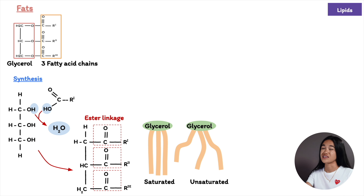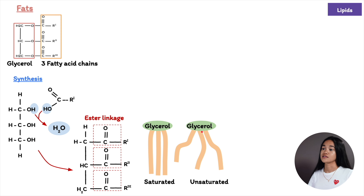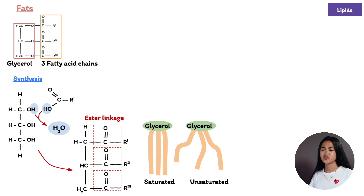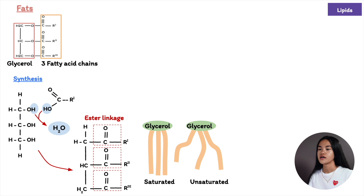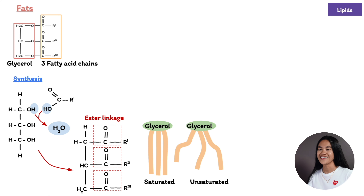Almost all double bonds in naturally occurring fatty acids are cis double bonds, which create a kink in the hydrocarbon chain. There are also trans fats, which are unsaturated fats formed artificially containing one or more trans double bonds — this occurs during the hydrogenation of oils.